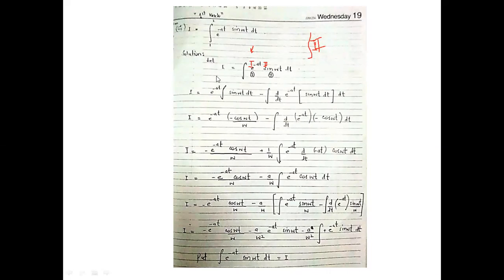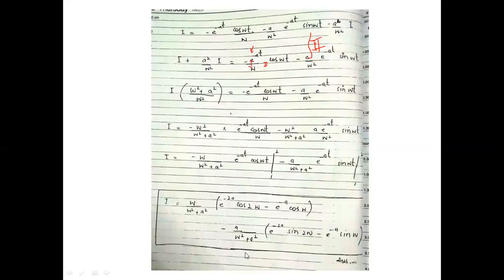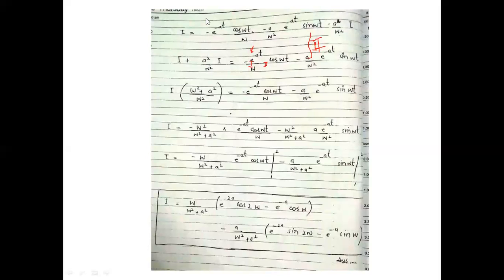For the integral of e^(−8t) sin(ωt), neither function decays to zero, so the standard selection doesn't apply directly. The trick is to call the whole integral I, apply integration by parts once, and then apply it again — recovering I on the right-hand side so you can solve algebraically. This is left as homework. From the next lecture we will start the Fourier series by finding a₀, aₙ, and bₙ for different functions. Thank you, stay blessed.